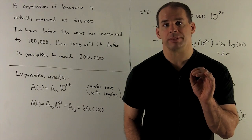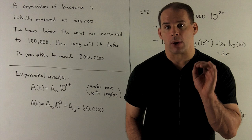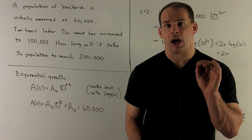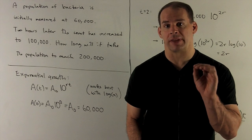A bacteria population has an initial count of 60,000. Two hours later, the count's at 100,000. How long will it take for the count to get to 200,000?